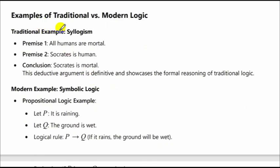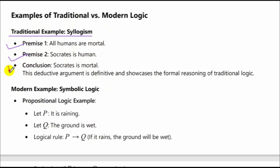Examples of traditional versus modern logic: a traditional logic example includes a syllogism — premise one: all humans are mortal; premise two: Socrates is human; conclusion: Socrates is mortal. This deductive argument is definitive and showcases the formal reasoning of traditional logic.